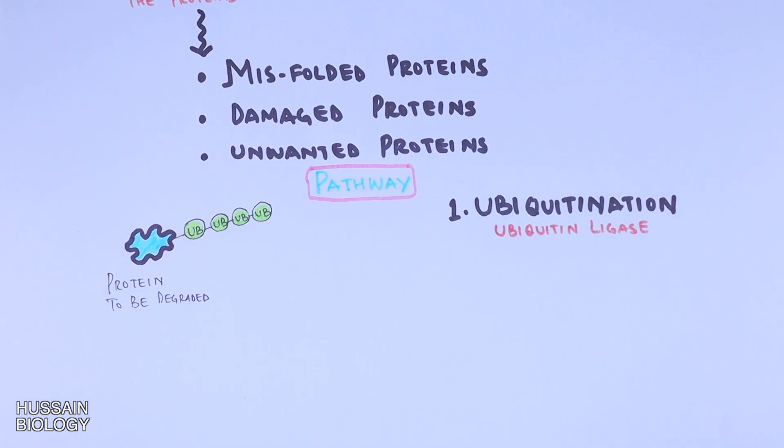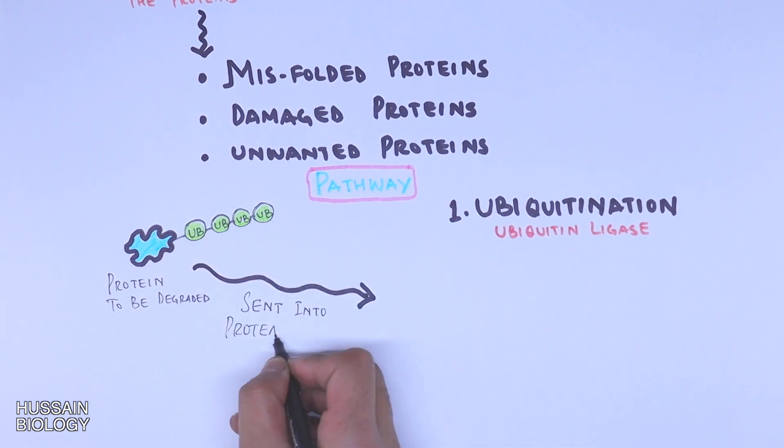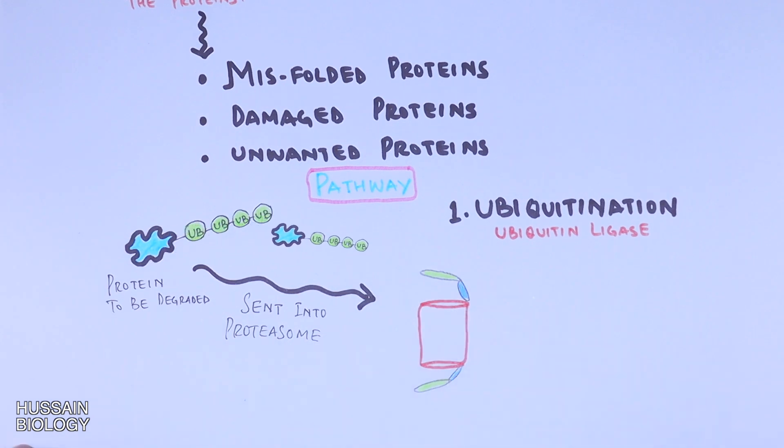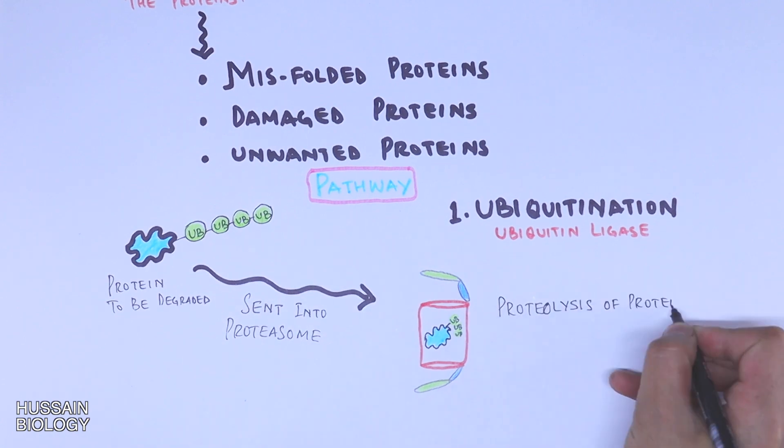In the next step, the marked protein is sent into the proteasome where the proteolysis of protein occurs, which eventually degrades the protein. So this is the simple pathway which I have shown here in a brief manner. Now let's see what are the types of proteasomes.